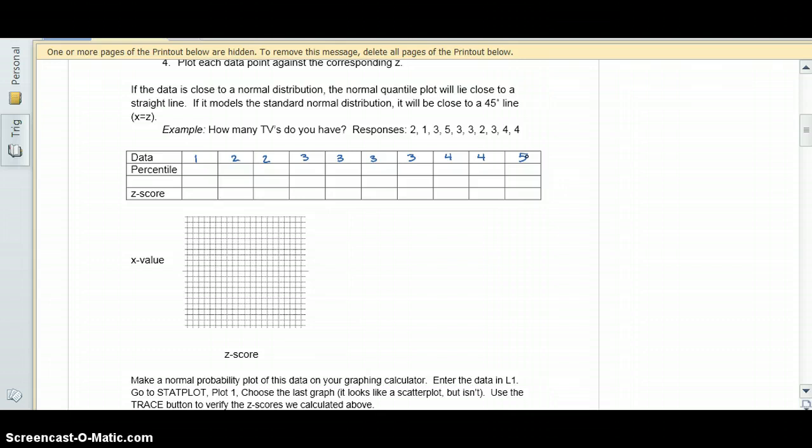There are 10 data values. We might say that the first one was the 10th percentile, the second one would be the 20th percentile, the third the 30th, then the 40th, the 50th, the 60th, the 70th, the 80th, the 90th, and the 100th percentile.